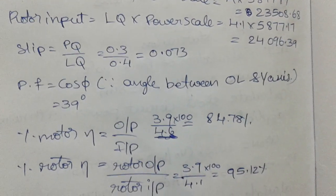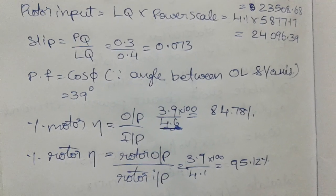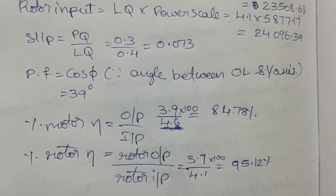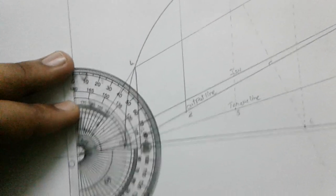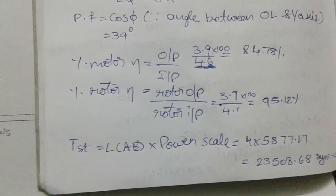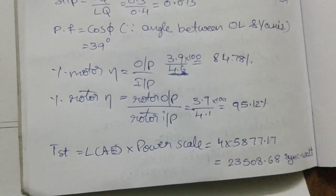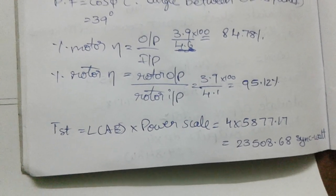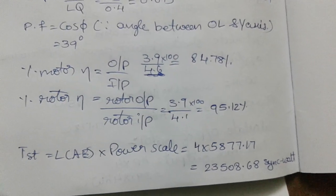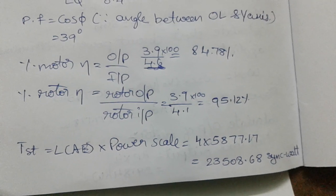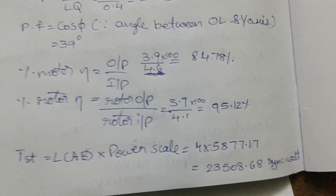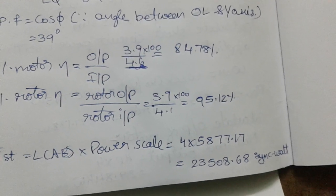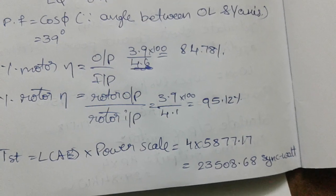The power factor, cos φ, is the angle between OL and the Y-axis, which is 39 degrees, measured from the circle diagram. Motor efficiency equals output divided by input: 3.9 divided by 4.6 multiplied by 100, giving 84.78 percent. Rotor efficiency equals rotor output divided by rotor input: 3.9 divided by 4.1 multiplied by 100, giving 95.12 percent.